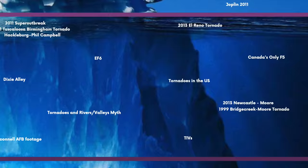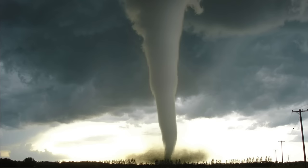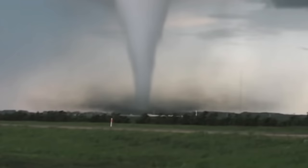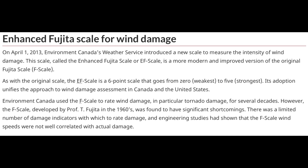Canada's only F5 — the Elie, Manitoba F5 that occurred on June 22, 2007. This tornado was extremely powerful and absolutely beautiful, and there were no fatalities. One of the GOAT tornadoes for sure, with a ridiculous path. Fun fact: this was also the last F5 tornado, as Canada wouldn't adopt the EF scale until later.